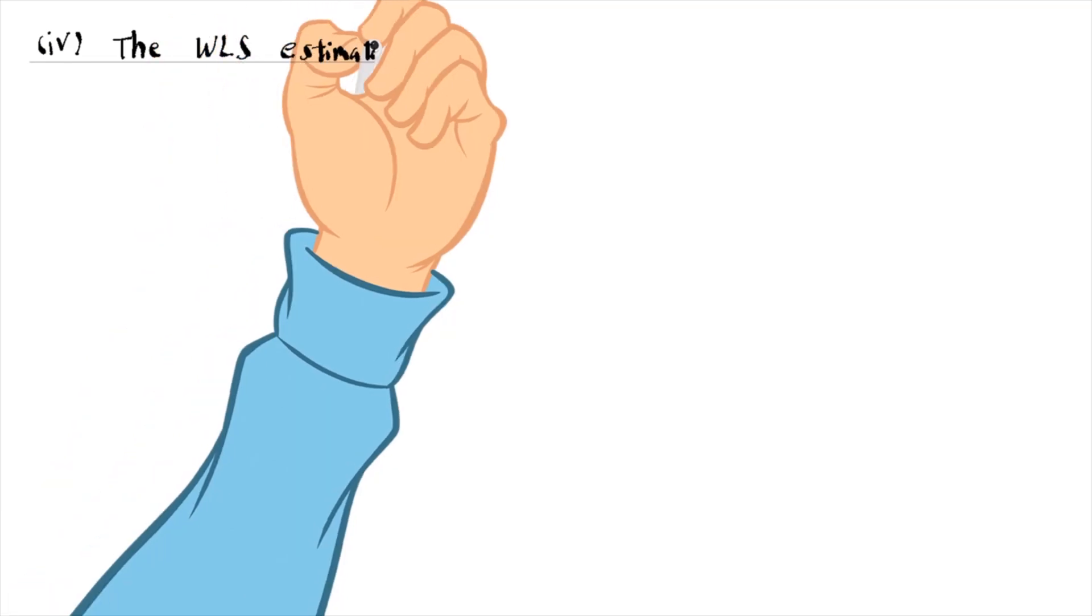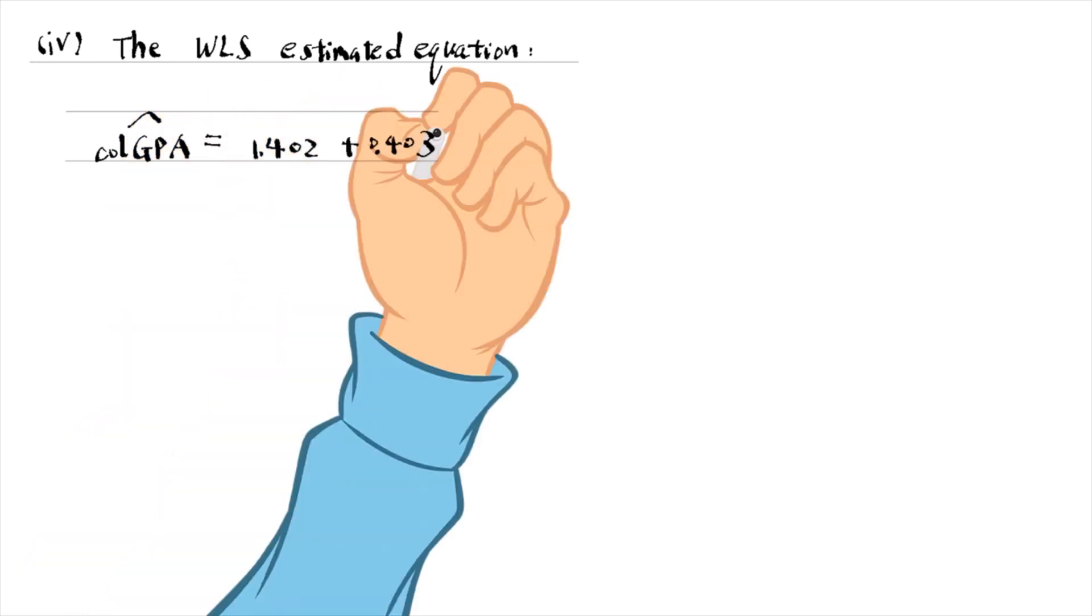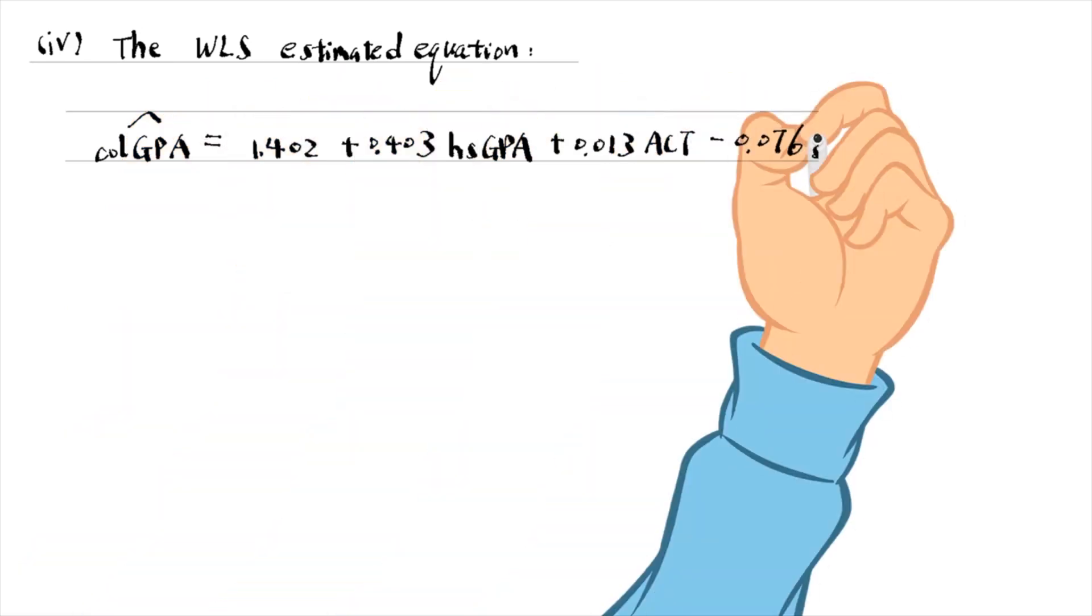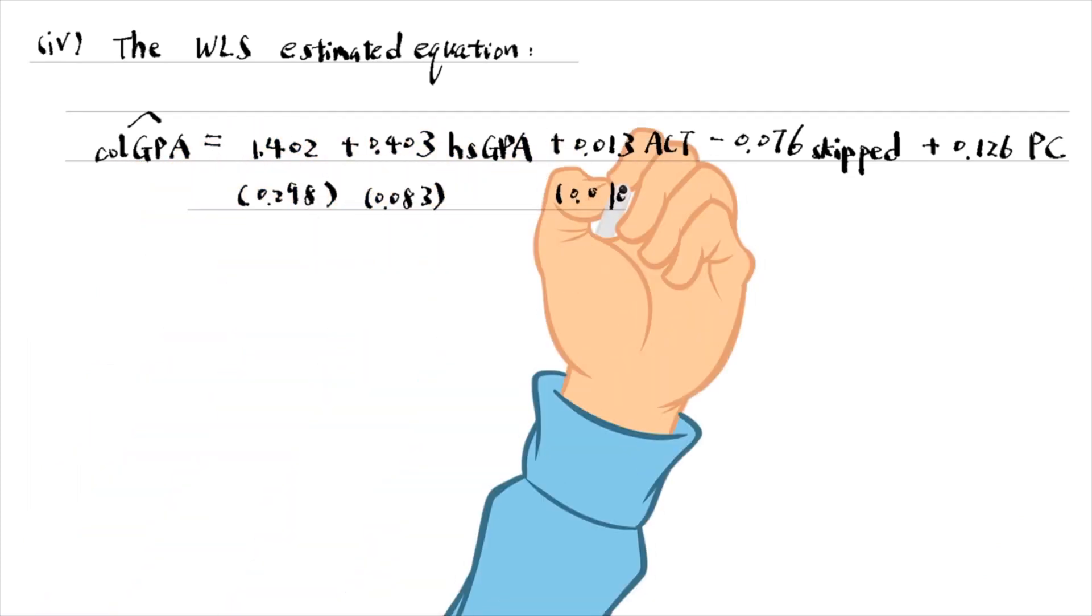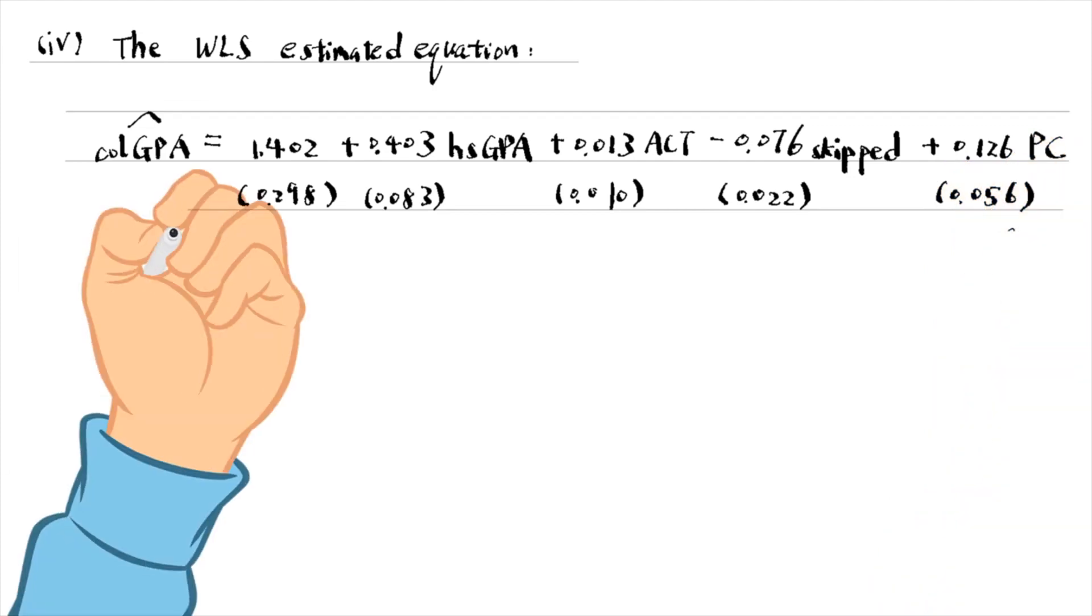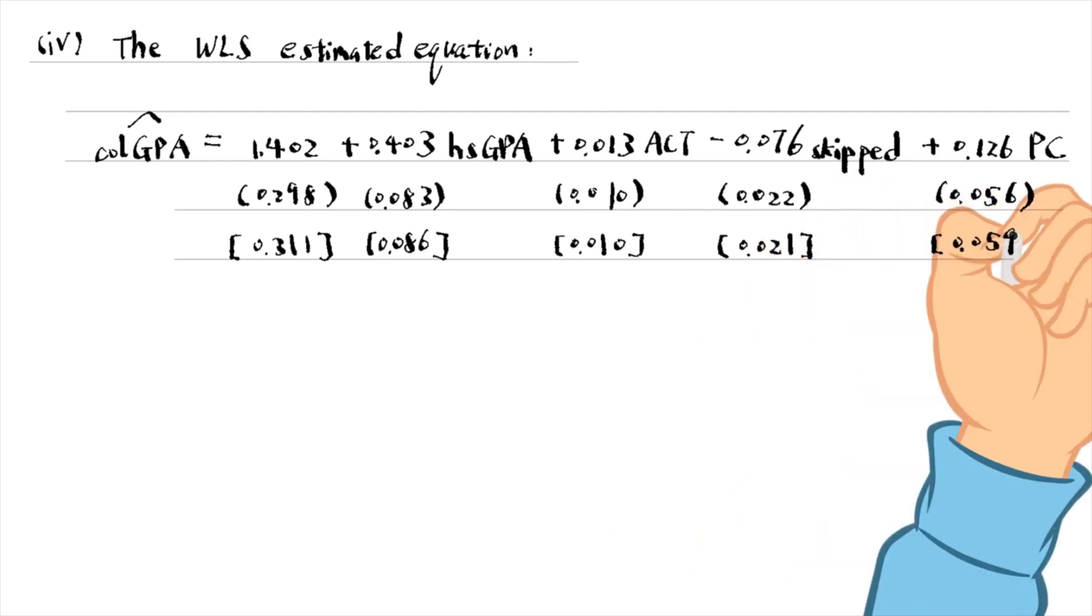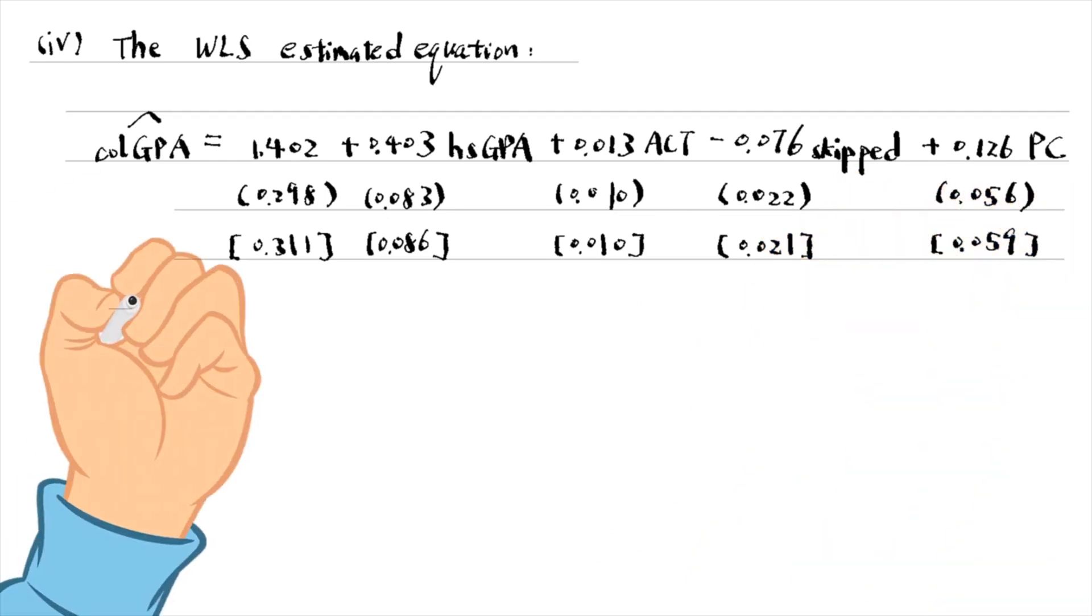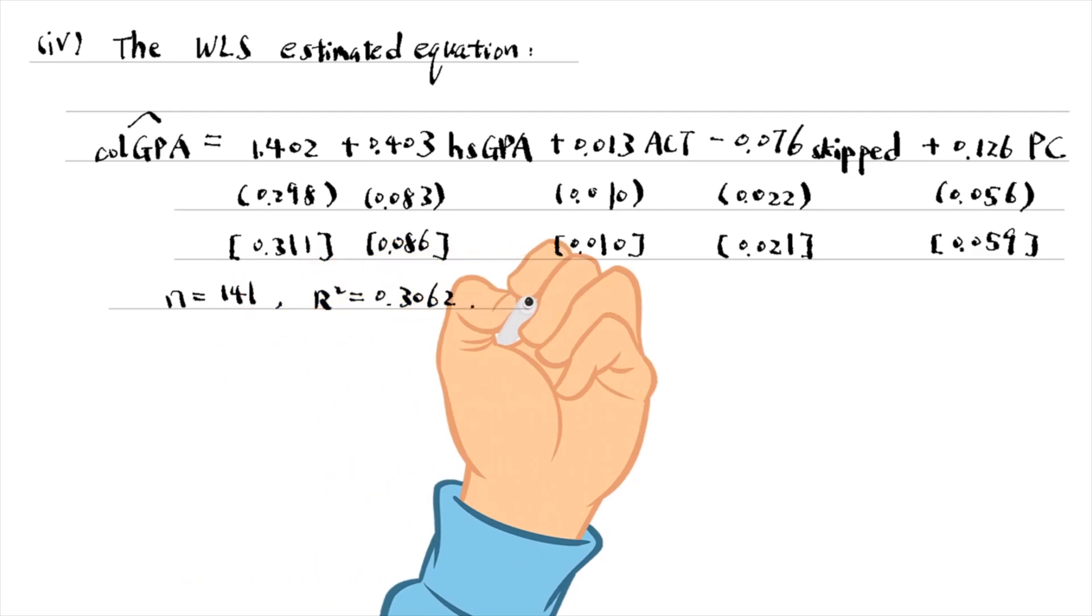For the last part, I report the estimated weighted least squares equation with the usual standard errors in parentheses and the robust standard errors in brackets. They do not differ substantially. The significance of the estimates is essentially unchanged.